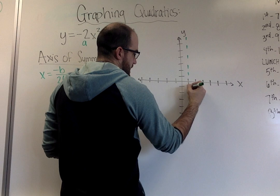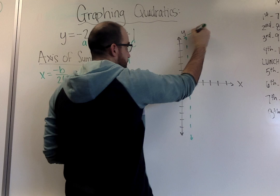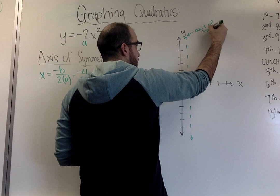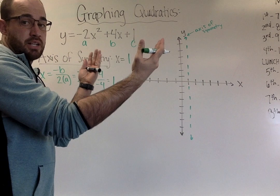The reason why it is dotted is because it is technically not a part of the actual graph itself. It is kind of an imaginary line separating the two equal sides from each other.